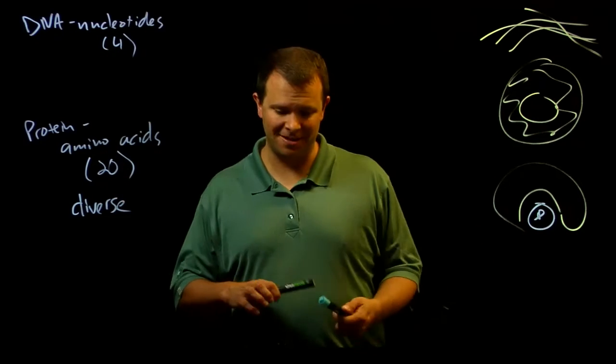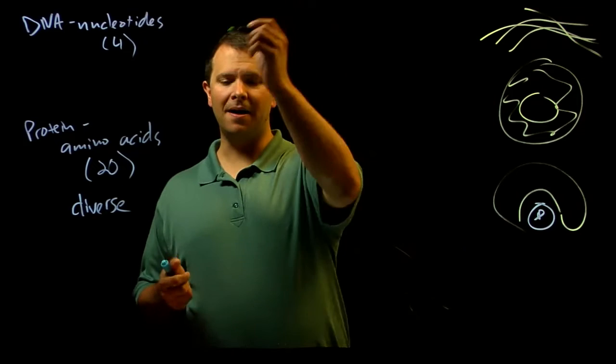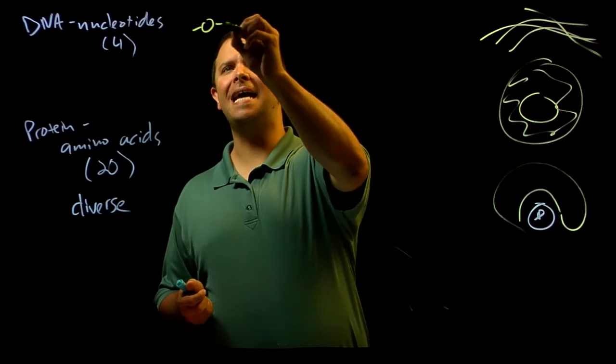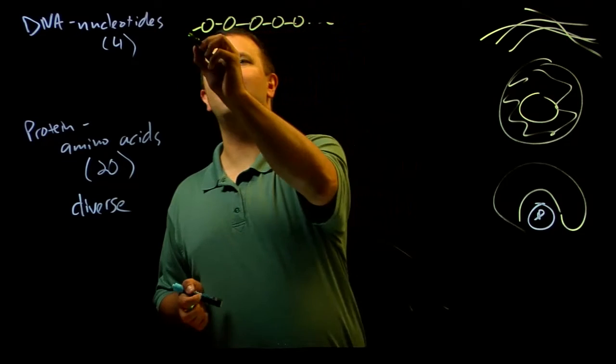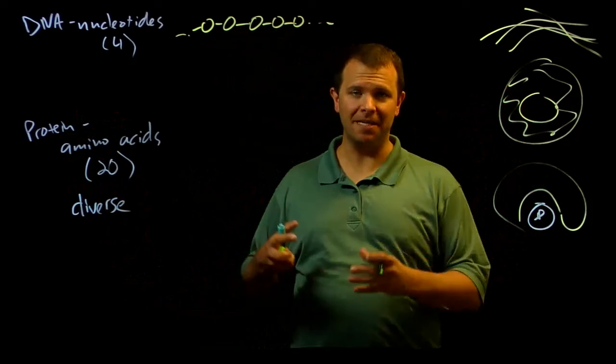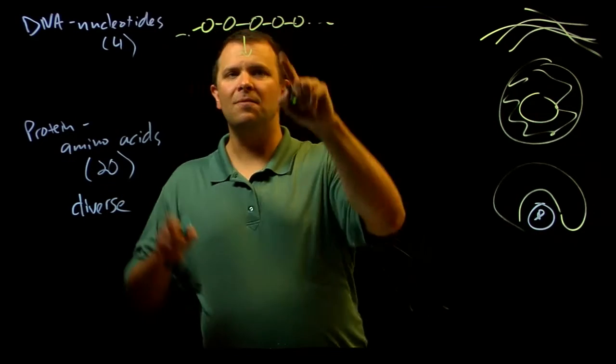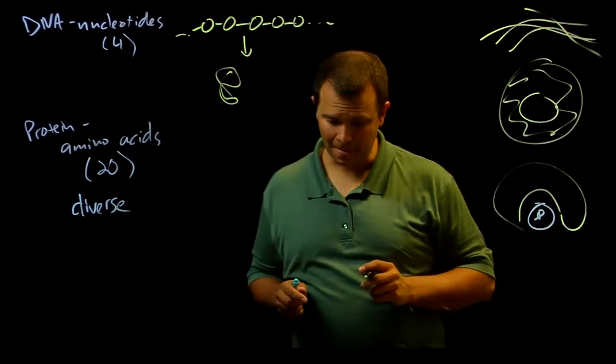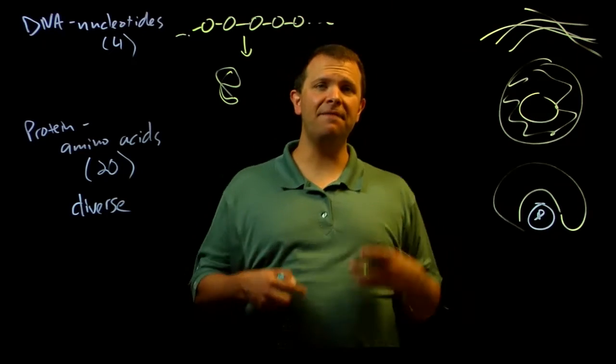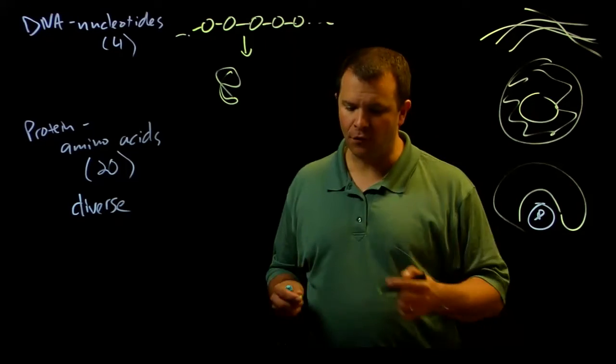they also interact with each other, which means that even though a polypeptide starts out as a linear molecule, a linear assemblage of amino acids, the interactions between the side chains mean that it folds up. And it's the specific three-dimensional shape that is a result of this folding.